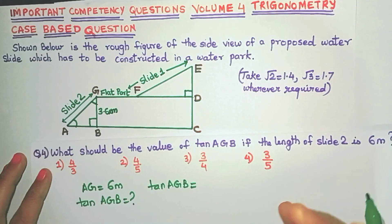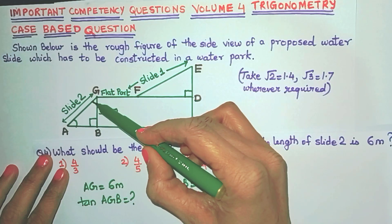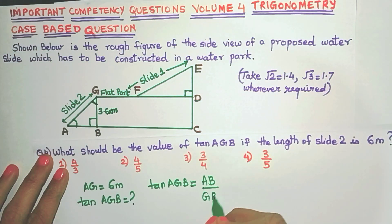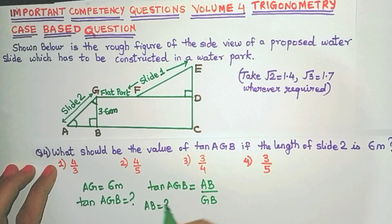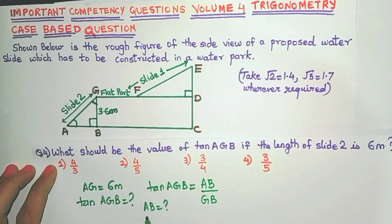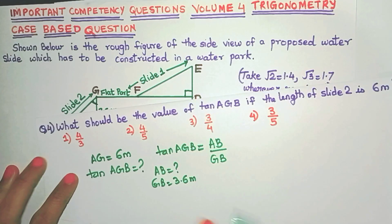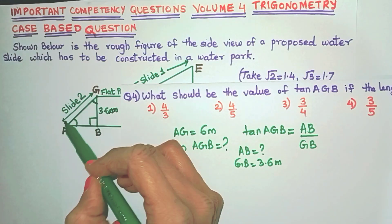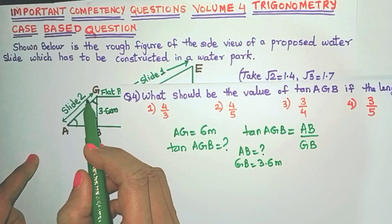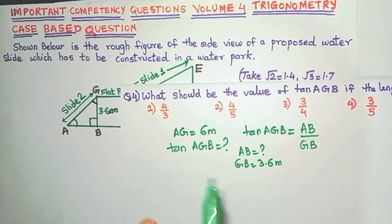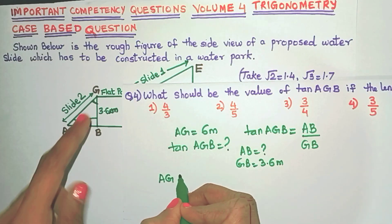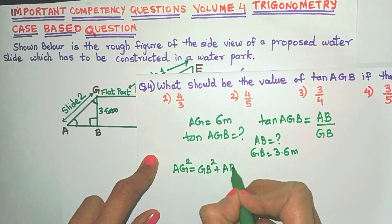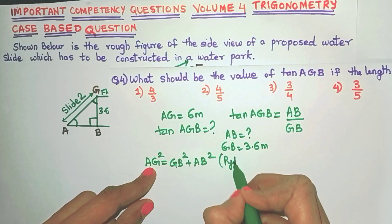Tan ratio is opposite upon adjacent. For angle AGB, the opposite side is AB and the adjacent side is GB. We don't have AB, so we need to find it. GB = 3.6 is already given. Since triangle GAB is a right-angle triangle, we can use the Pythagoras theorem: AG² = GB² + AB². So 6² = 3.6² + AB².